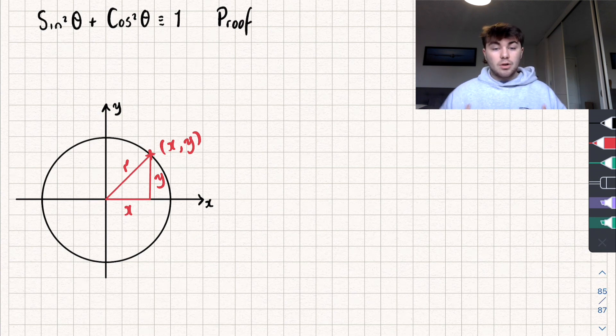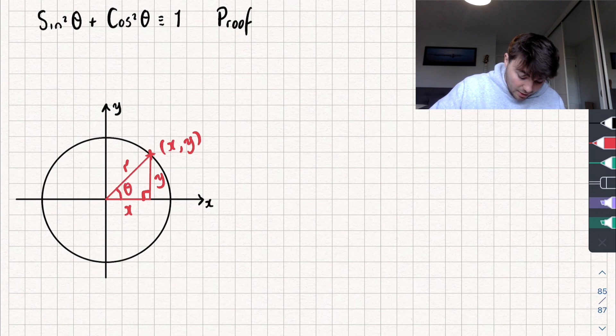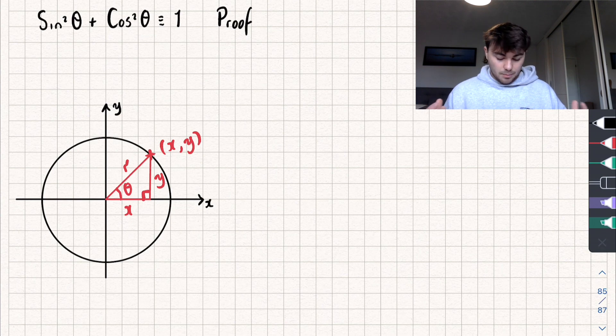And so now we've actually constructed a right angle triangle and I'm going to say that this angle here is an angle theta. So based on everything we've just said, let's see what statements we can make.